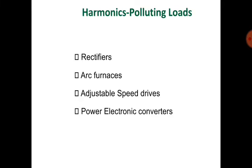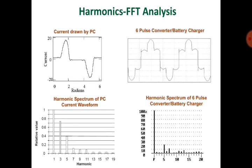Harmonic polluting loads include all power electronics converters, rectifiers, arc furnaces, and adjustable speed drives. To find the harmonic content in any system, we need to do FFT (Fast Fourier Transform) analysis on a CRO.